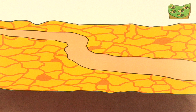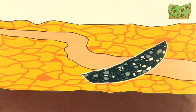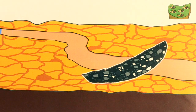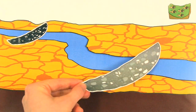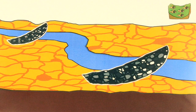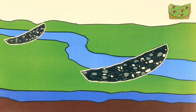In streambed systems, structures such as sand dams or check dams are constructed across temporarily flooded channels. They are built from upstream to downstream to reduce the force of the water flow, to infiltrate water and to control erosion.